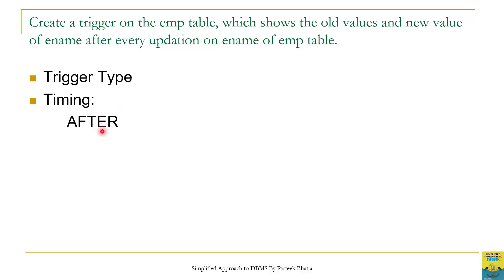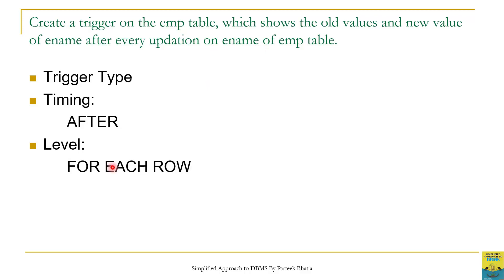Now let us give a thought on the level of this trigger. This trigger should perform its action for every row processed by this update statement, and it should display old and new values of ename for every row updated by the update statement on the ename column of the emp table. Thus the level of the trigger will be FOR EACH ROW.